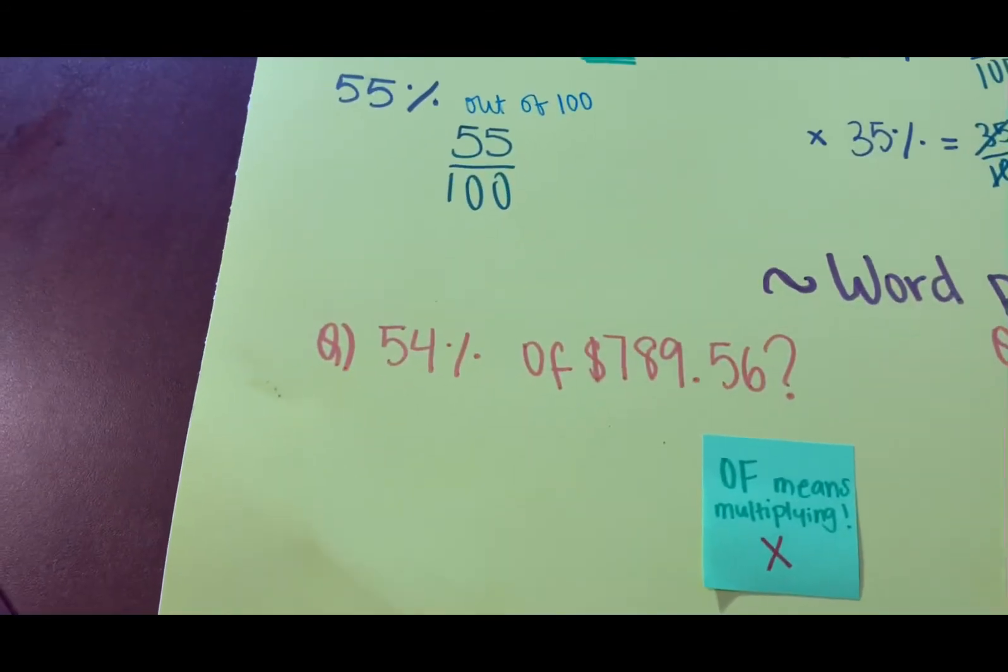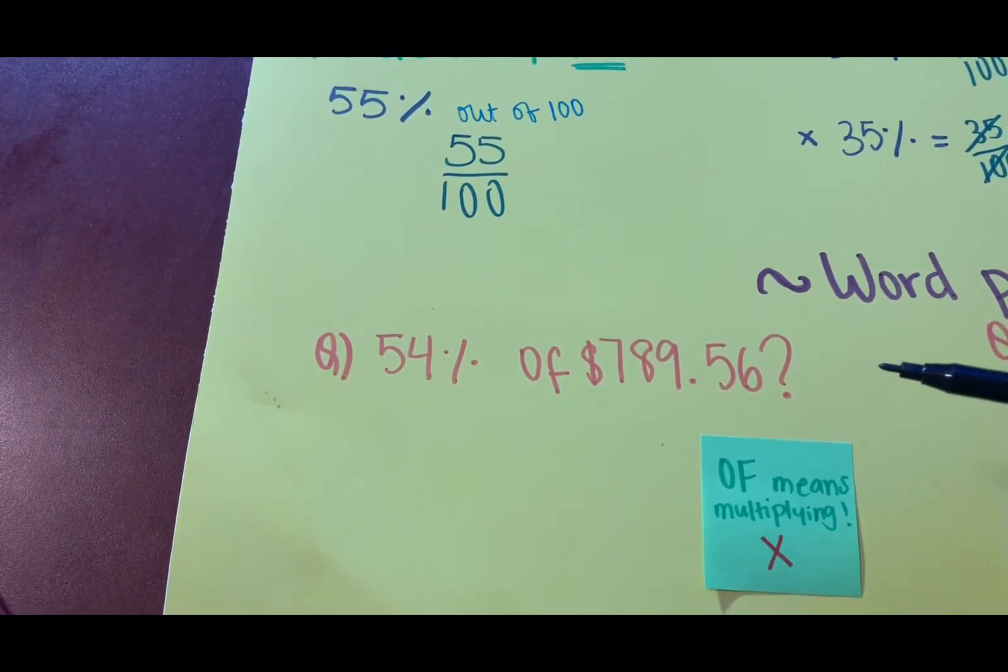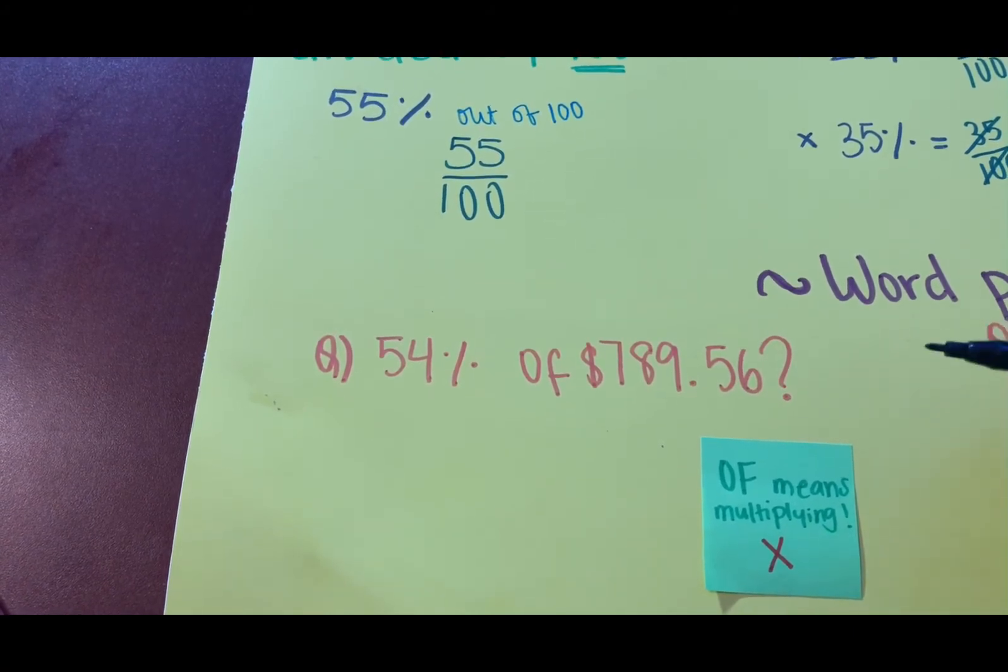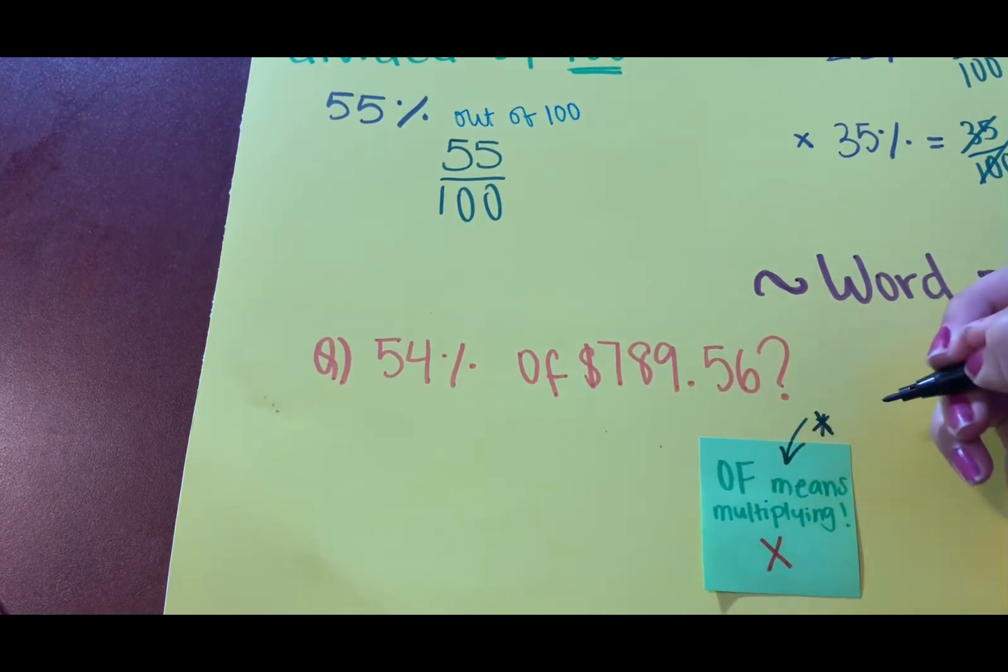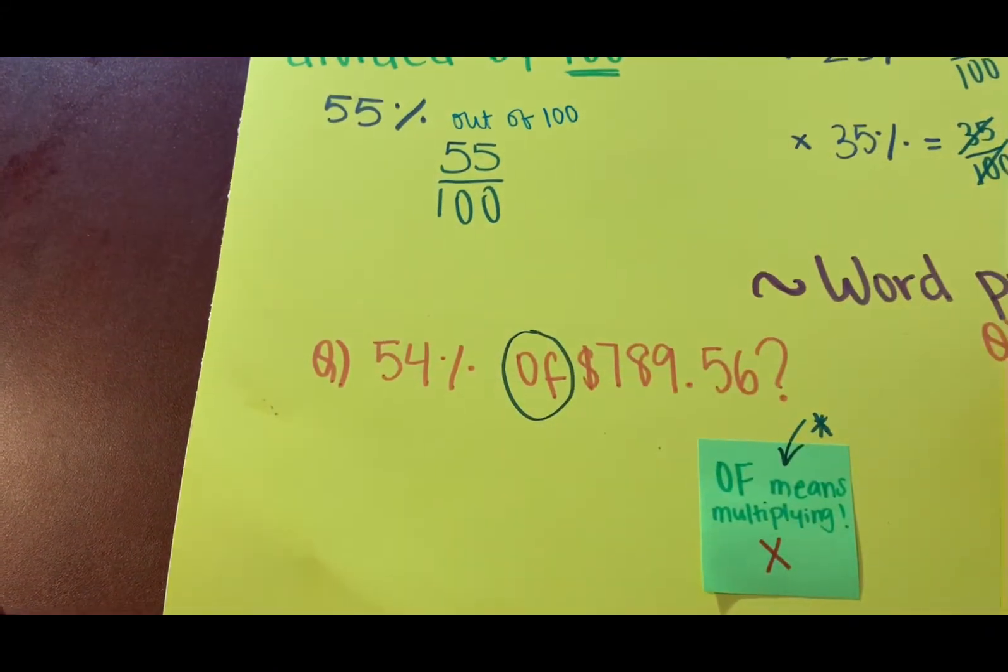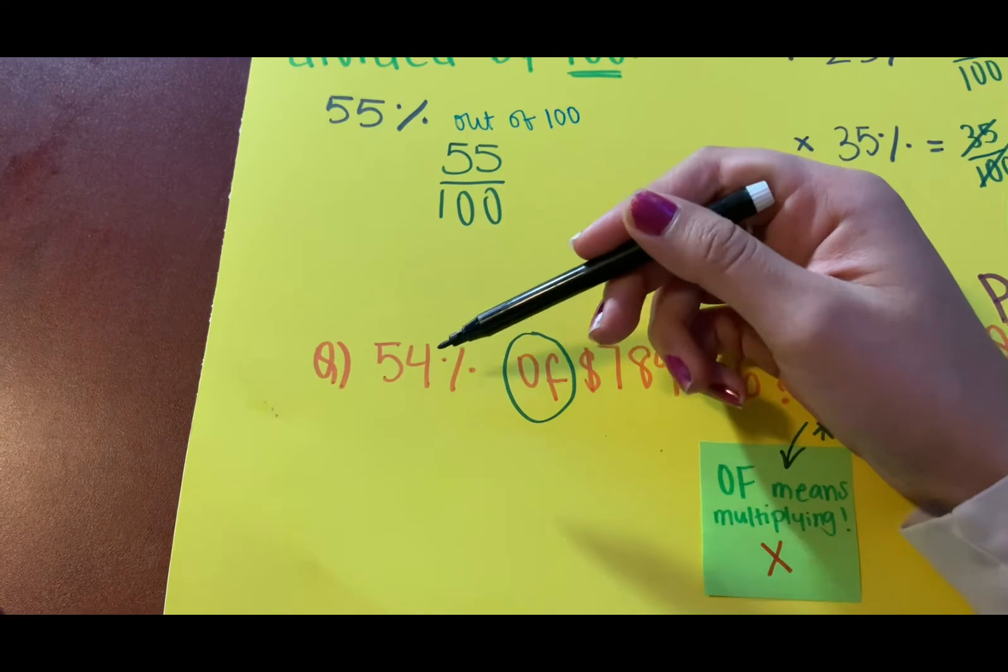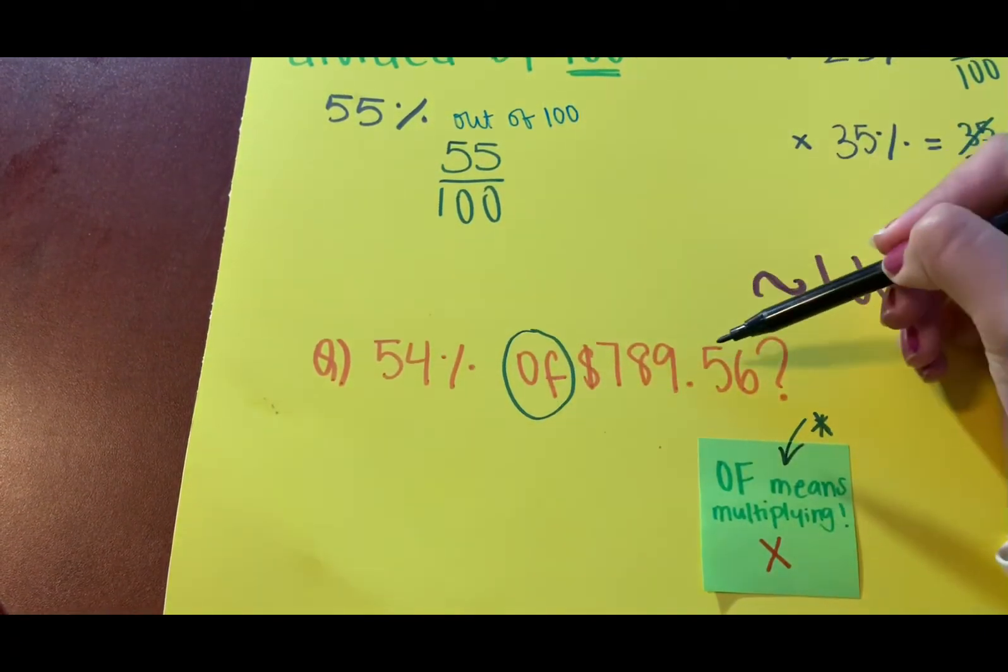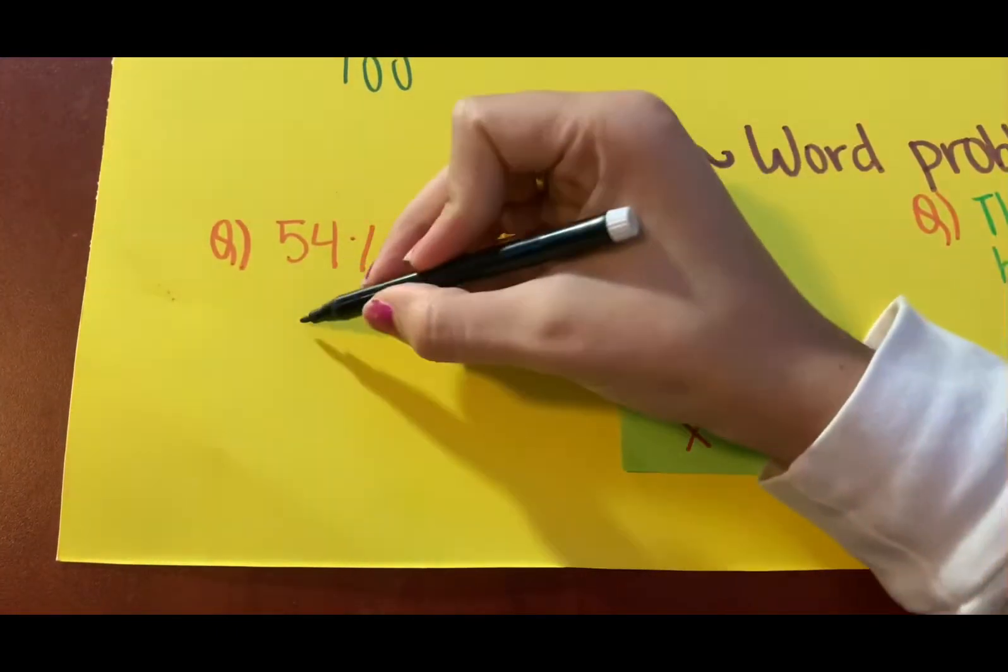The first question says 54% of $789.56. What is 54%? Okay, so here I wrote a sticky note, very very important. It says 'off'. When you have the word 'off', it means multiplication. So you basically divide 54, which is 54 over 100, multiplied by 789.56. Let's write that down. So 54 over 100 multiplied by 789.56.